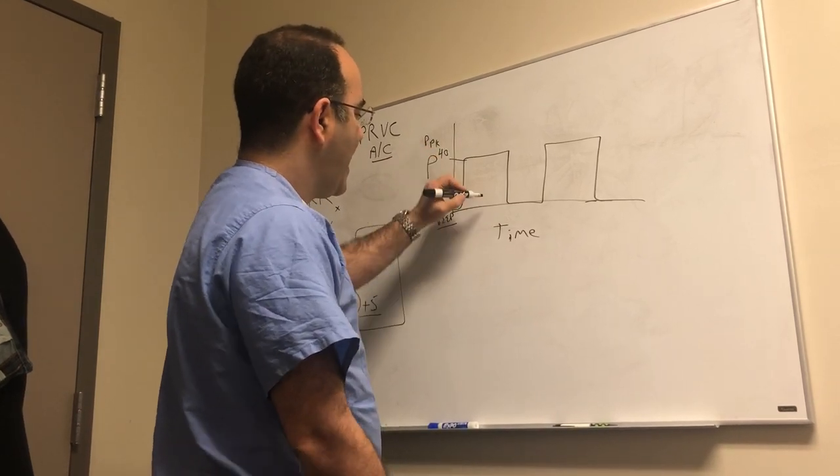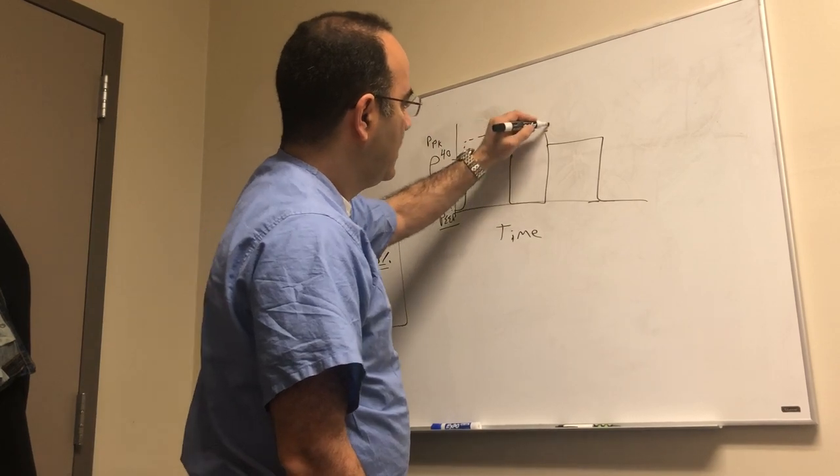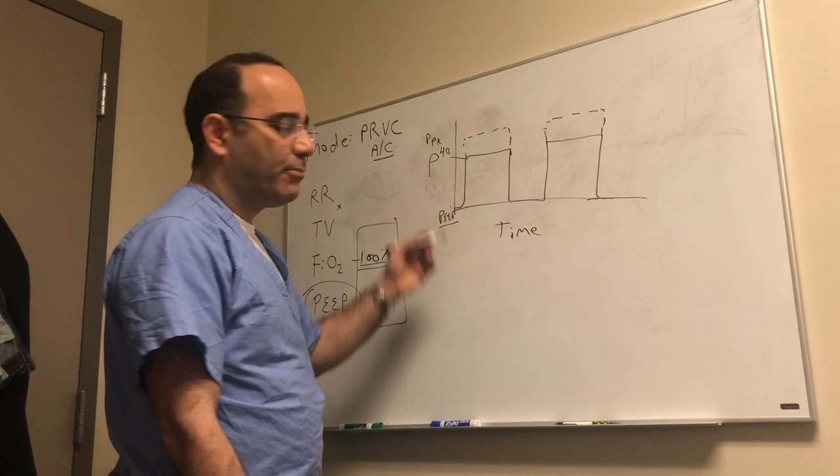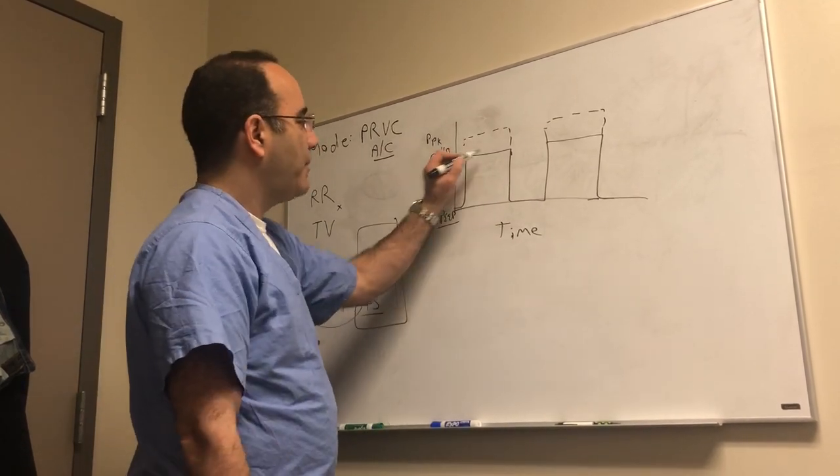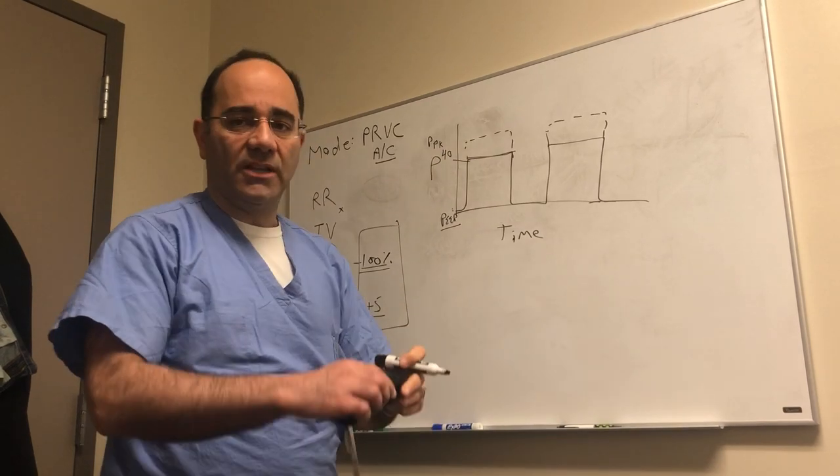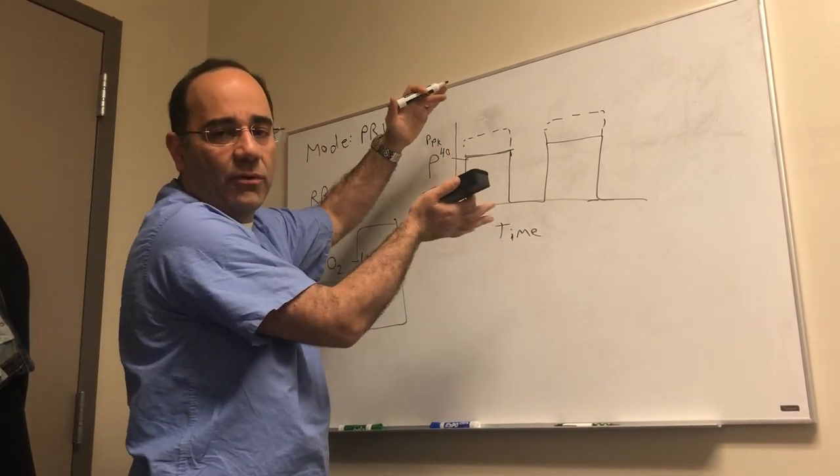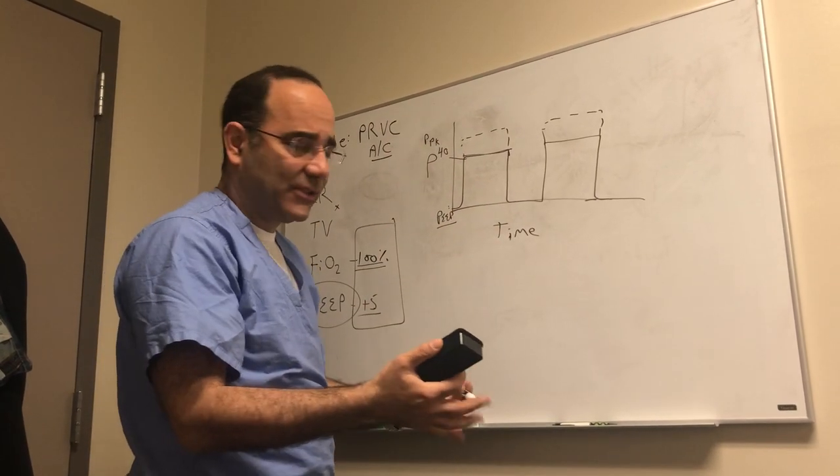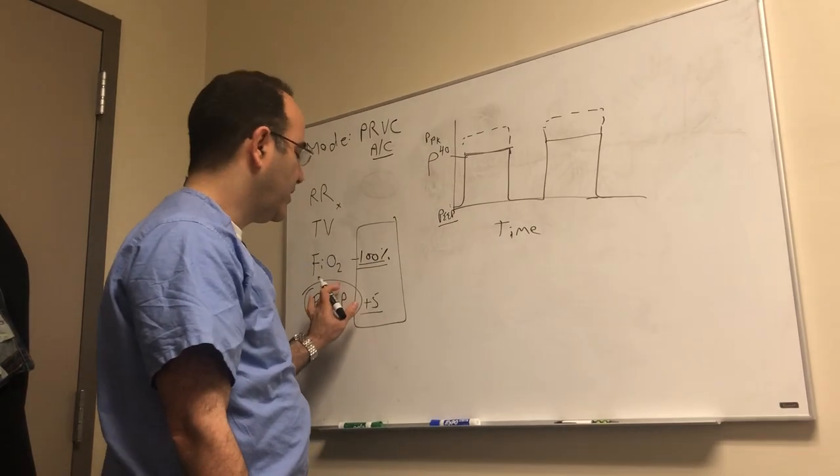As you start dialing PEEP, you can imagine if I raise the height of this box I'm going to start exceeding the upper limit. If I look at the ventilator and my peak pressure is 30, sure dial up the PEEP, you've got plenty of room to go. But if I'm riding a peak pressure of 40 and I start dialing in more PEEP, I'm going to exceed that 40 limit and I have to be careful of barotrauma which could result in a pneumothorax.